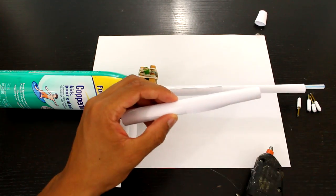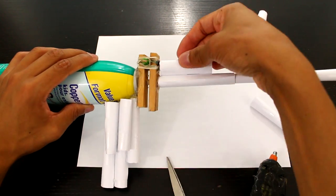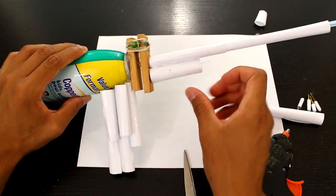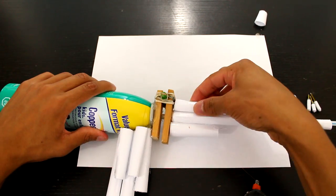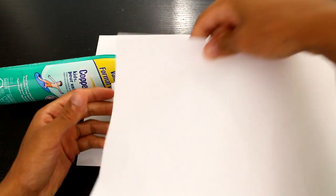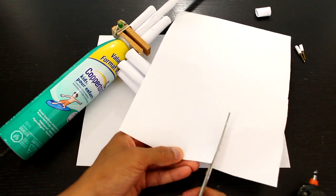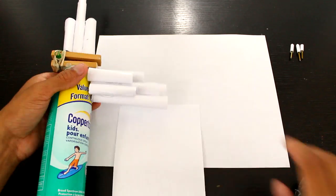After I make the handle I'm just going to make something to help support the barrel of the gun. Once that's finished I'm just going to wrap both of them in paper to make it look a little nicer.